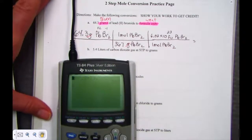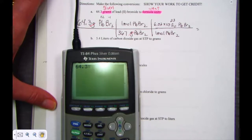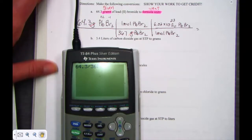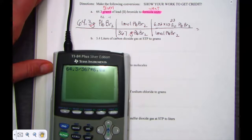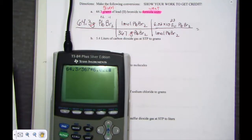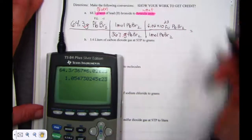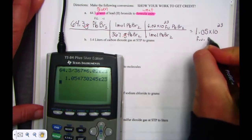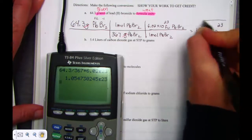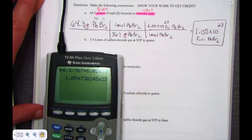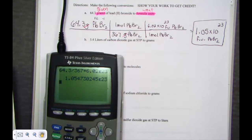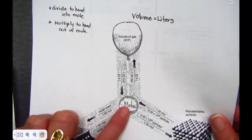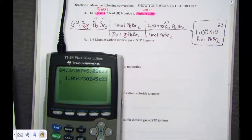Hit with me so we get used to the key sequence: 64.3 grams of lead bromide, divided by the molar mass of 367, multiplied by Avogadro's number, 6.02 × 10²³. If your screen matches mine, the answer is 1.05 × 10²³ formula units of lead bromide. We moved from the scale where we measured in grams, into the mole and back out to the number of particles — a two-step mole problem.